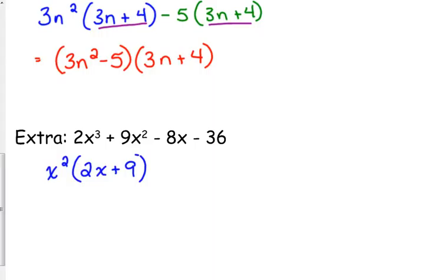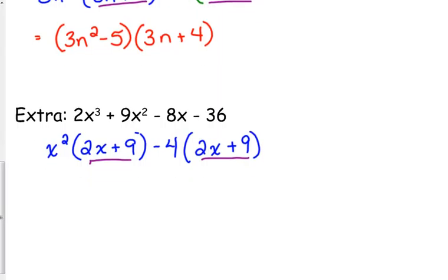For -8x - 36, we want to take out a -4. We're left with 2x + 9. That makes me feel a little bit better. We match now. 2x + 9. We've got it in both. So we put the GCFs together, x² - 4, list the common factor, and here's what I was just talking about a second ago. x² - 4 factors further.